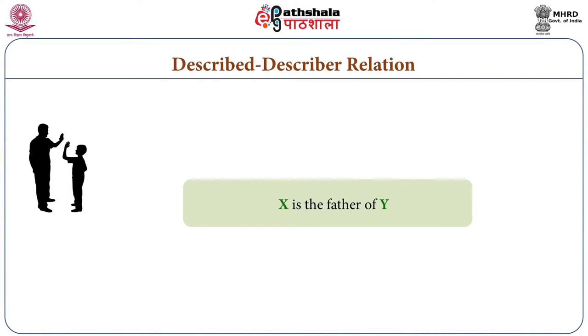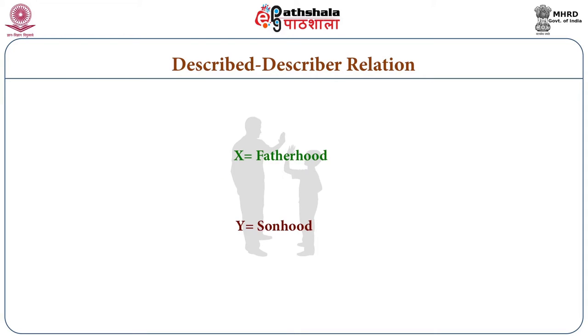Another important concept is Nirupya-Nirupaka-Bhava — describer and describedness. This is also a kind of relation. In the father-son example where X is the father of Y: in Y there is sonhood and in X there is fatherhood. This fatherhood cannot exist if it does not describe the sonhood in Y, and the sonhood in Y describes the fatherhood in X. Both sonhood and fatherhood describe each other — they are mutually describing.